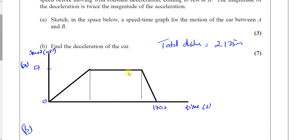This section went from 0 to 17, and that section went from 17 to 0. If the magnitude of the deceleration is twice, that means it takes half the time. So the acceleration phase takes twice the time to reach 17 meters per second compared to the deceleration phase going from 17 meters per second to 0.